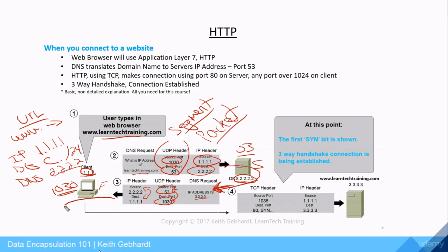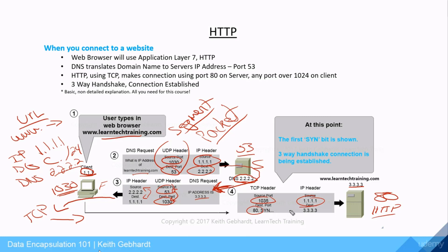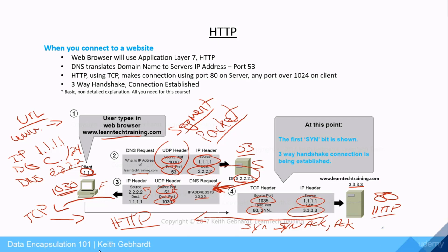Once our computer receives this information and knows the IP address to reach learntechtraining.com, it establishes a TCP connection. The source port may change, and now the destination port is 80 because that is the well-known port for HTTP. The computer then performs the three-way handshake — SYN, SYN-ACK, ACK — and then the HTTP connection is established.